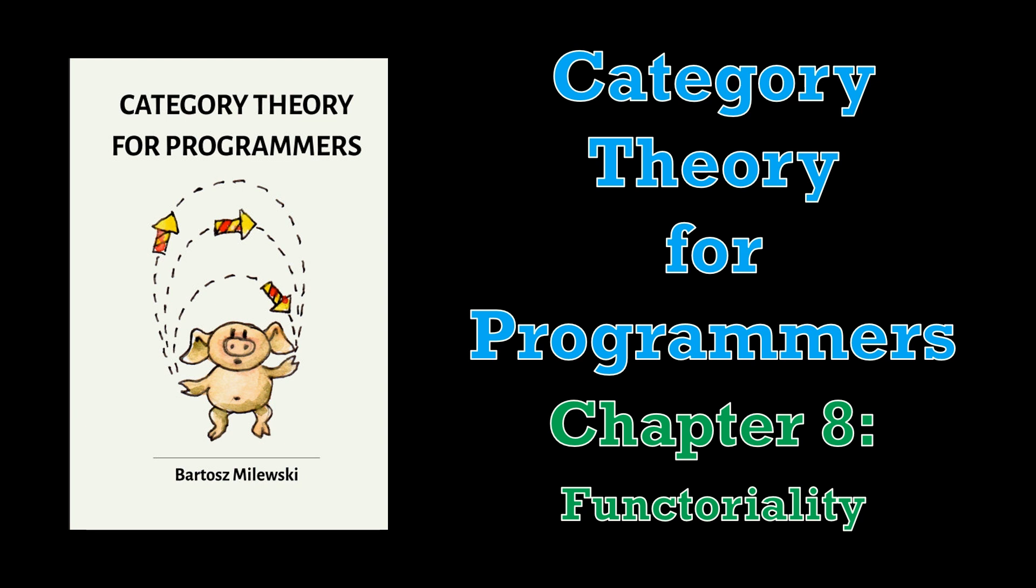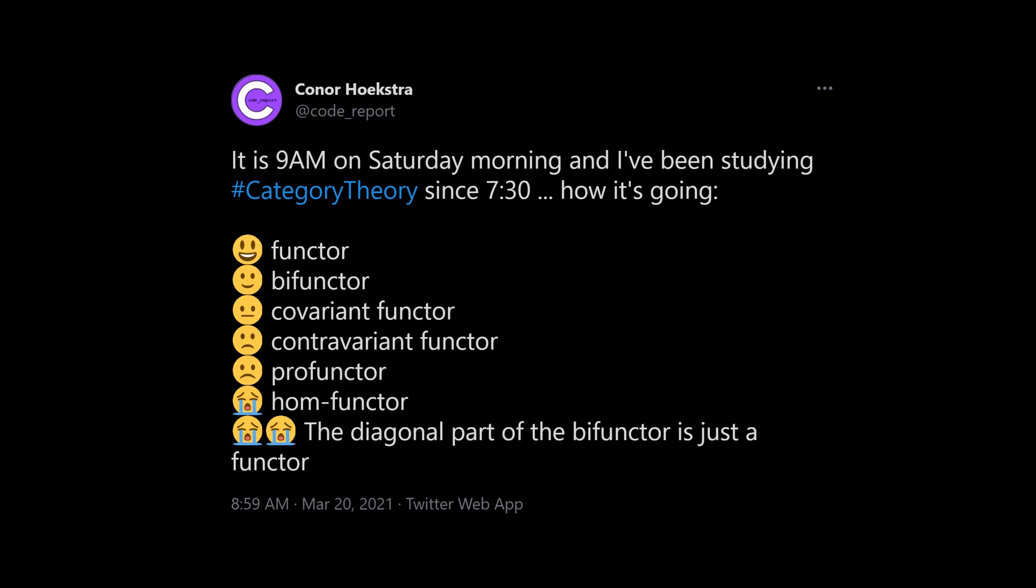We're going to start off by looking at a tweet from Saturday morning, roughly a week ago, where I tweeted out: it's 9am and I've been studying Category Theory for an hour and a half since 7:30, and this is how it's going. Functor, happy face. Bifunctor, slightly less happy face. Covariant functor, straight face. Contravariant functor, sad face. Profunctor, even sadder face. Homfunctor, crying. And then while watching Bartosz's lecture that corresponds to Chapter 8, he mentions the diagonal part of the bifunctor is just a functor, at which point we have two crying faces.